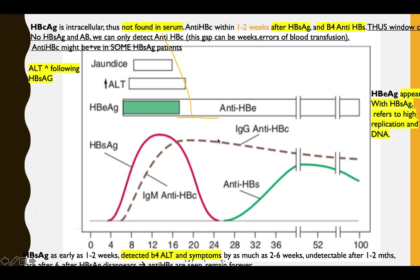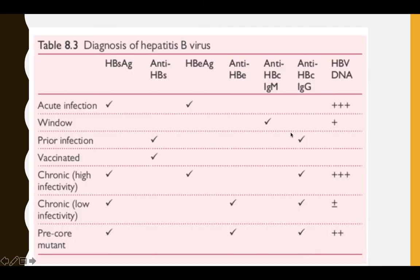During the window period, the surface antigen is gone. If the patient has symptoms but the surface antigen is not detectable, the only thing you can test for is anti-core IgM or anti-core IgG — it is the only marker detectable in this window. This window occurs in the acute form, not the chronic form.